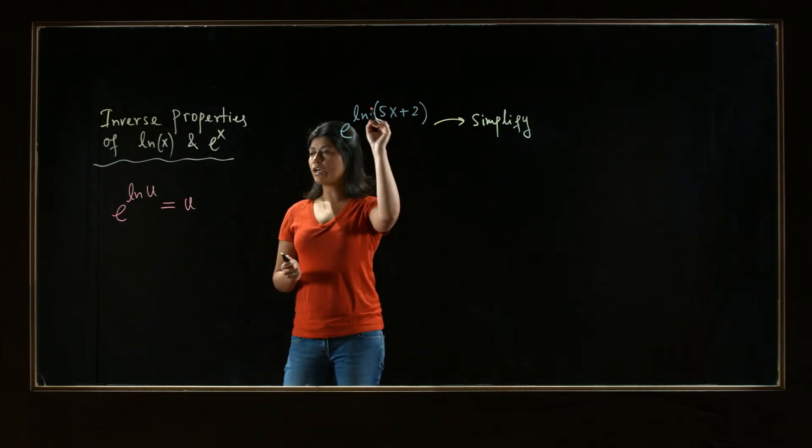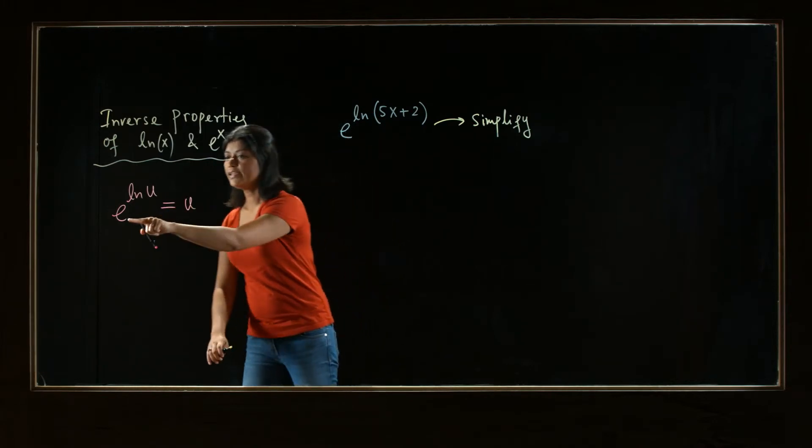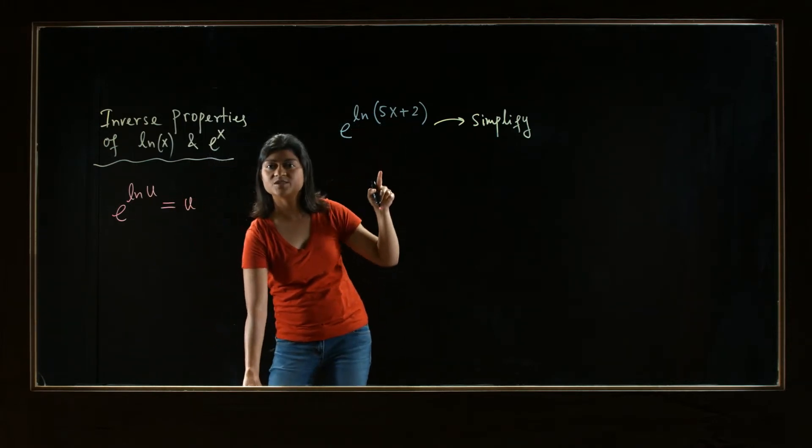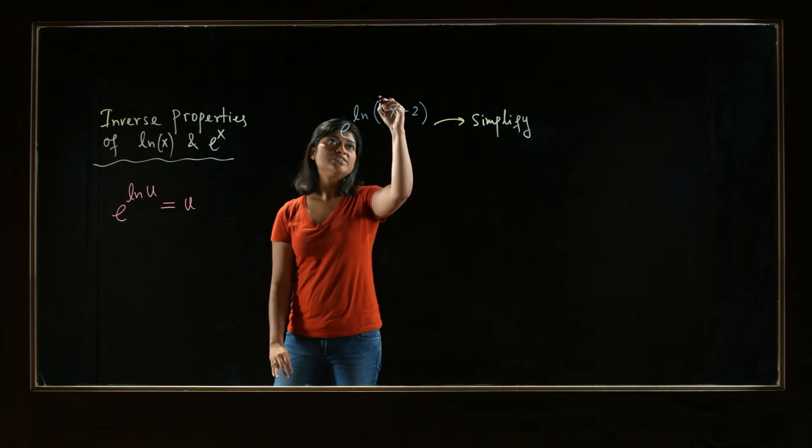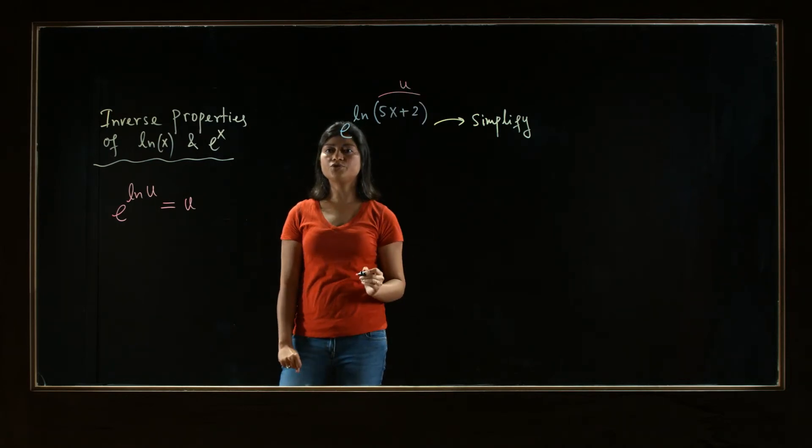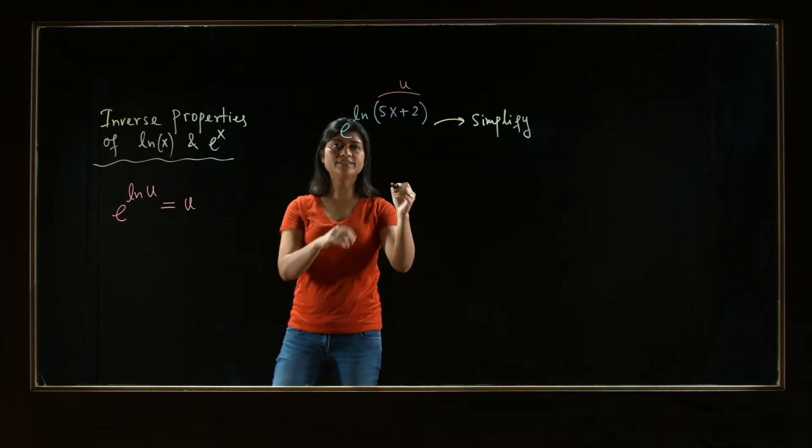So look at our expression now. It looks like e to the ln of some expression, so our u is right here, 5x plus 2. How do we simplify this expression?